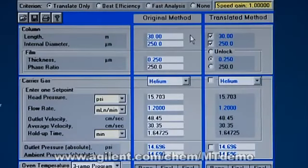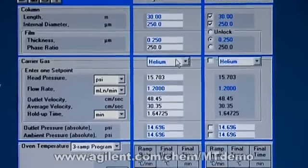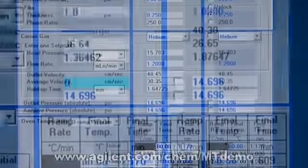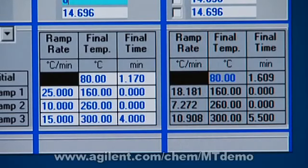So let's say I'm using a 30-meter, 0.25-millimeter ID column. I've got helium as carrier gas, and my starting temperature is 80 degrees. Now, it does really matter what temperature you start there because that's directly going to impact the pressure needed to drive the flow.